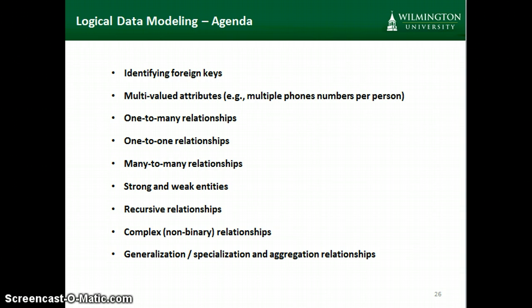We need to handle those multi-valued attributes before we complete our logical data model. We're also going to have a large number of one-to-many relationships, some one-to-one relationships, many-to-many relationships, and a category of strong and weak entities, which is a flavor of one-to-many relationships. Another type are recursive relationships, and then we'll get into more complex relationships including generalization, specialization, aggregation, and how we deal with those in our data model.